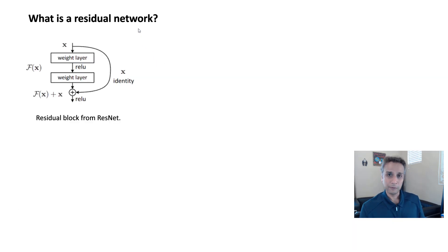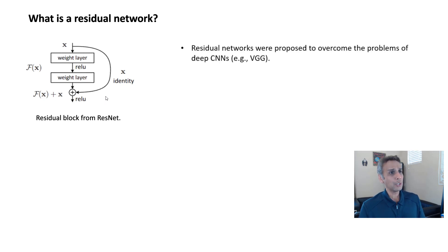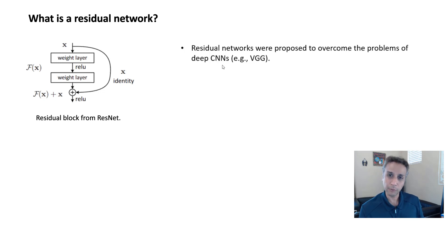Starting with the residual network. Here is an image defined as part of the original ResNet paper. Whenever you see a residual network, you see this line — what we call a shortcut connection. We'll understand this in a little while.